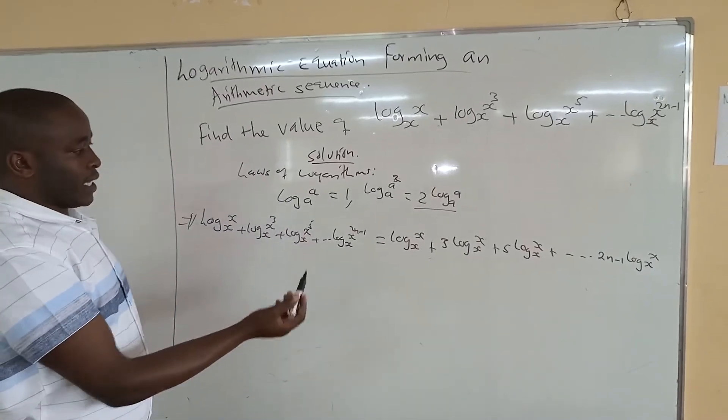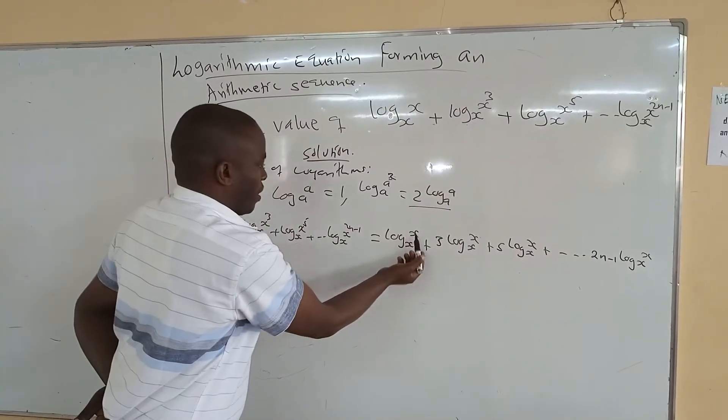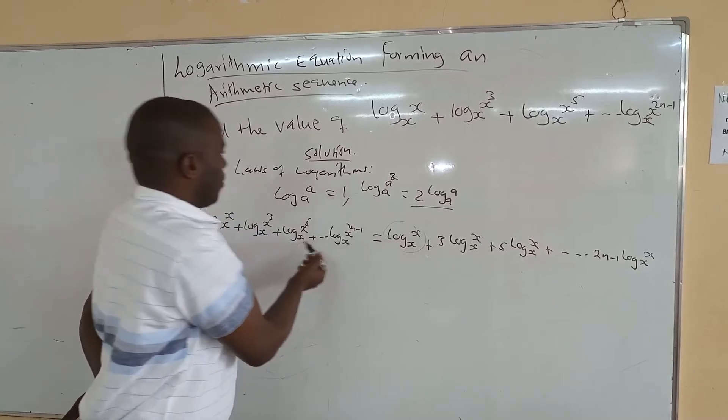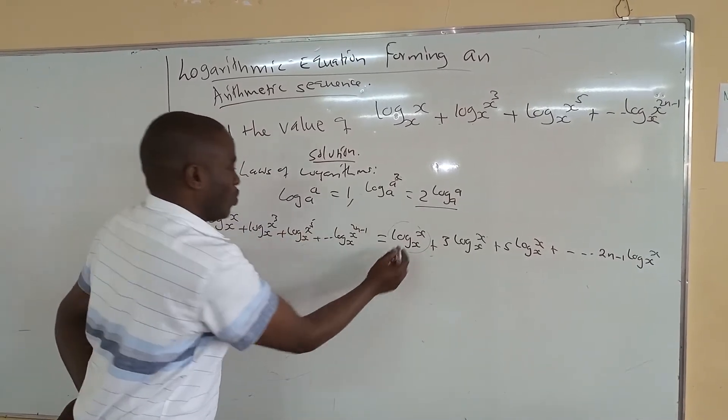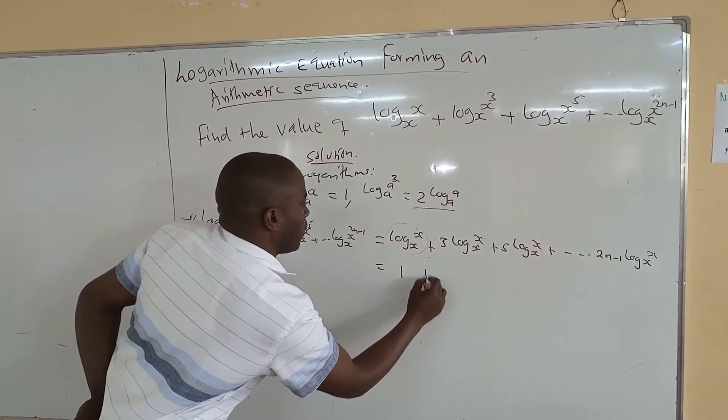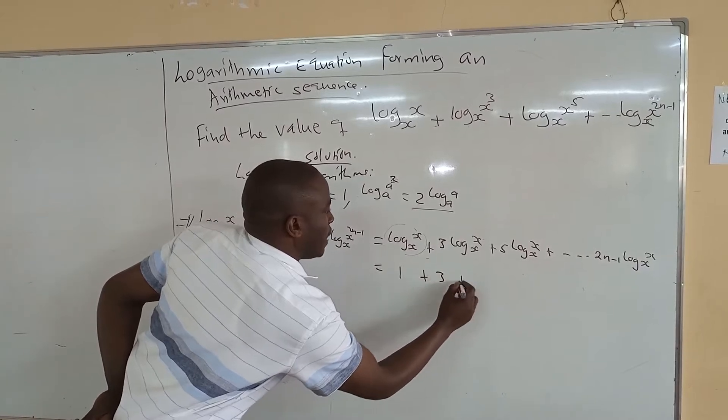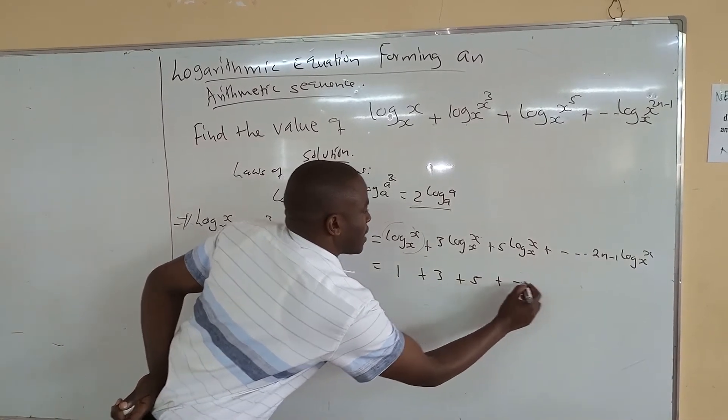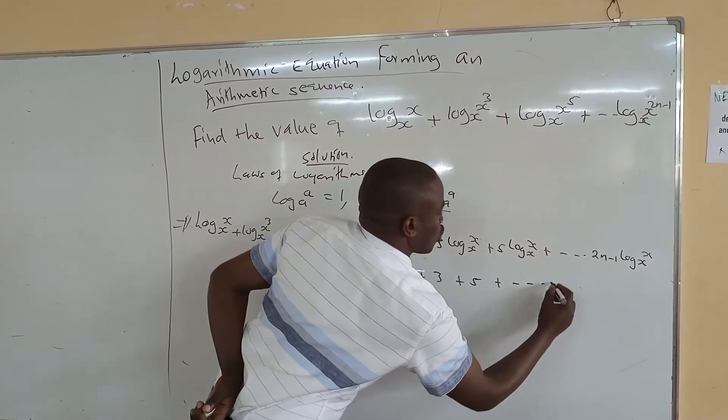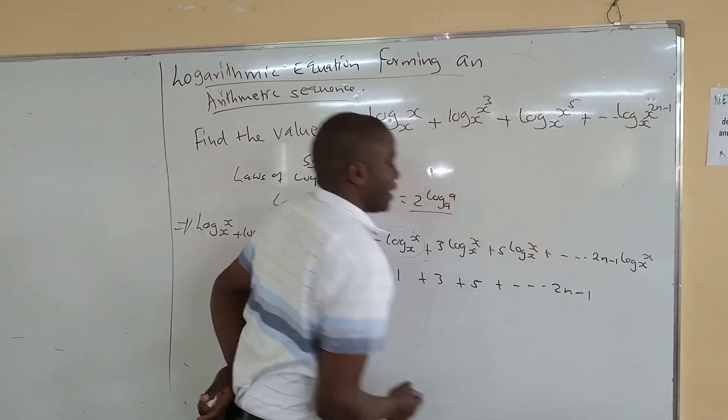So if we hear that, remember, we substitute this one with 1 because we say log a to a is 1. So we shall be adding which is equal to 1 plus, this becomes 3 plus, this becomes 5 plus, this becomes 2n minus 1. That is the last term.